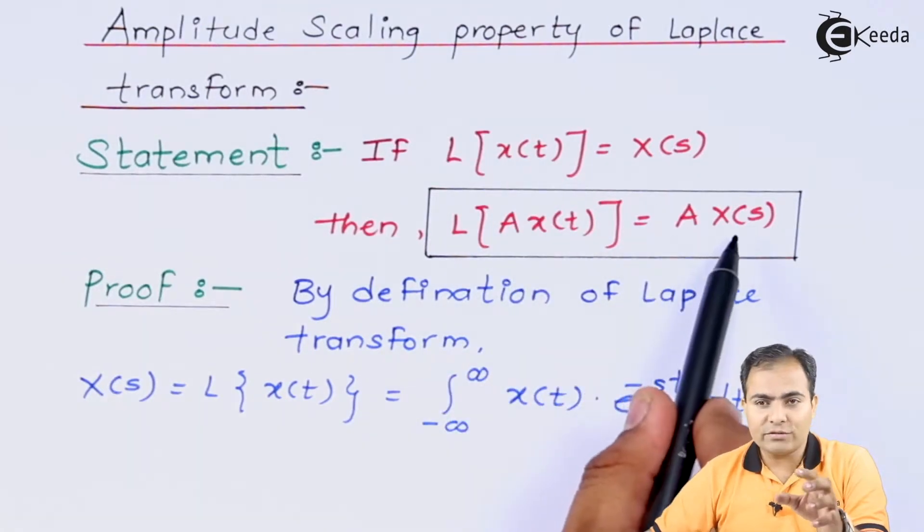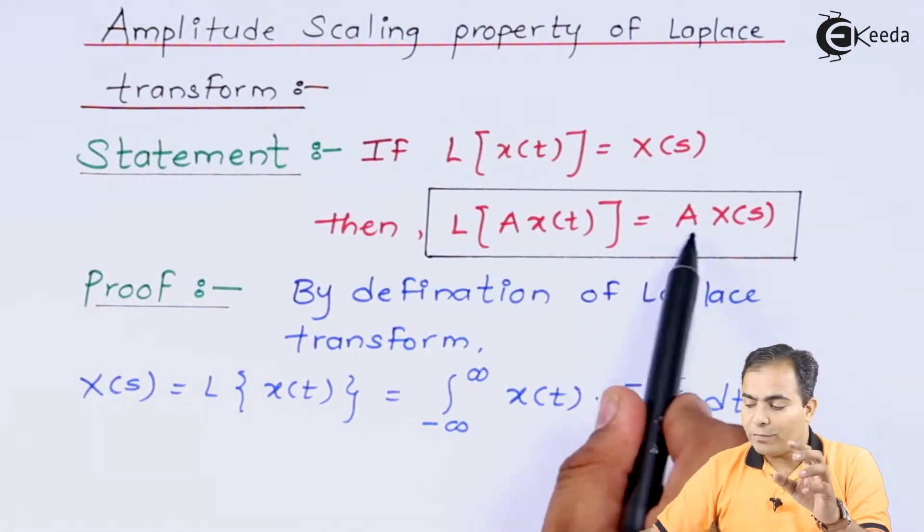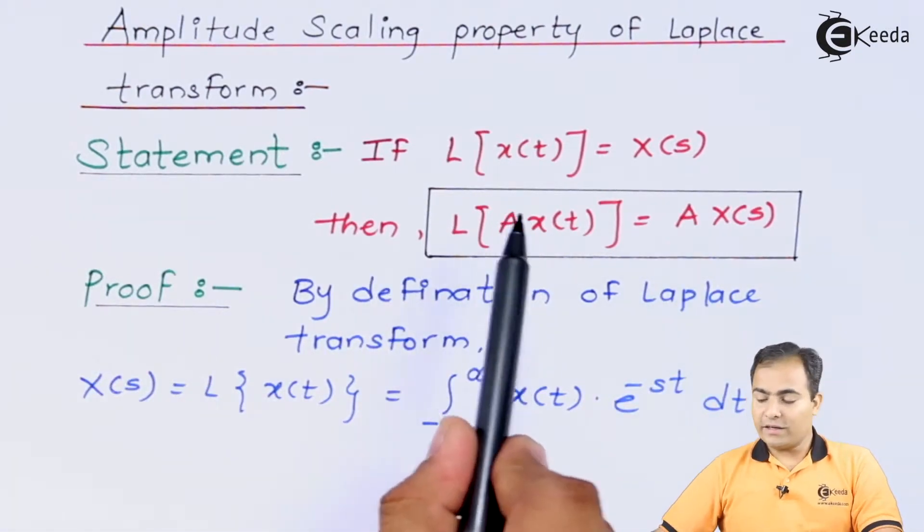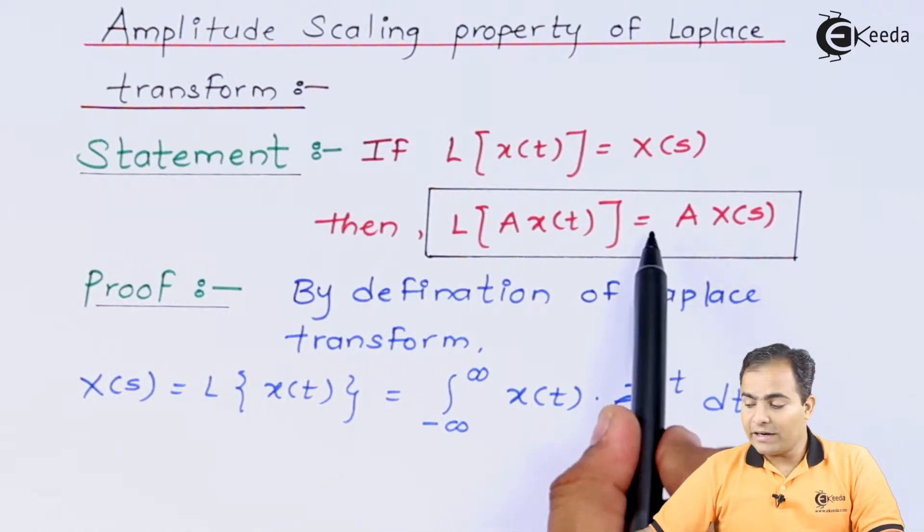Then the Laplace transform of this function is A x of s. So we are going to prove this part. If we are going to find out the Laplace transform of A x of t, then what do we want to say? You will get A x of s.